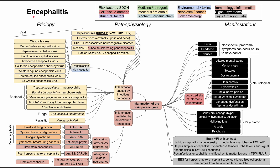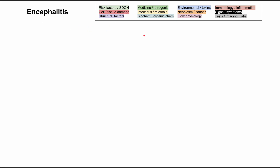This is a mechanism of disease map for encephalitis. I'll be talking about the etiology, the pathophysiology, and the manifestations of encephalitis. Encephalitis is inflammation of the brain parenchyma. I recommend watching this video in conjunction with the meningitis video, which is an inflammation of the meninges — the membranes that surround the brain — to help you differentiate between the two. Each of the boxes is color-coded according to the core concepts shown at the top right, and I'll be clearing each box and talking through them one by one.